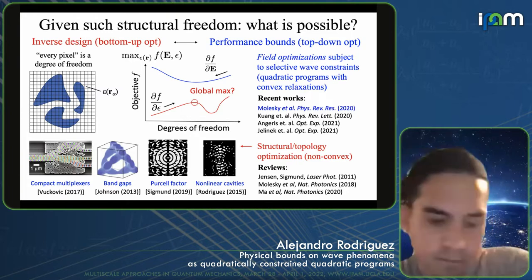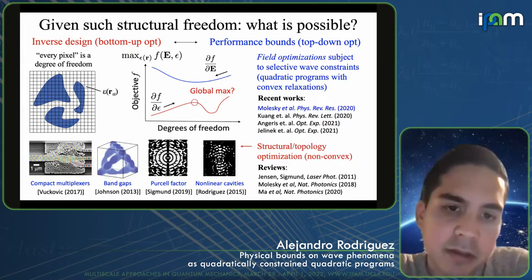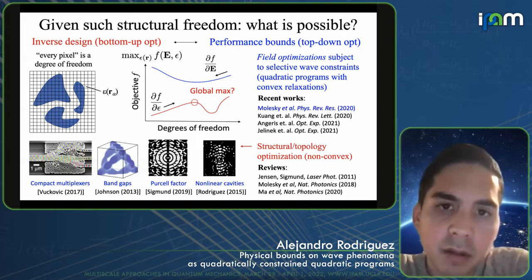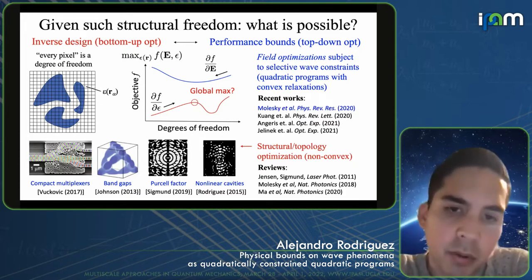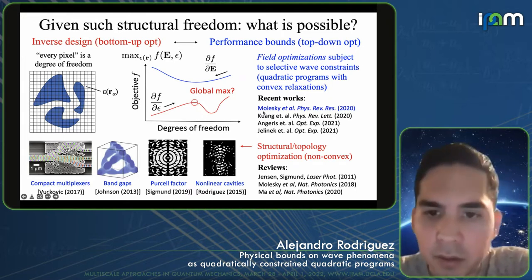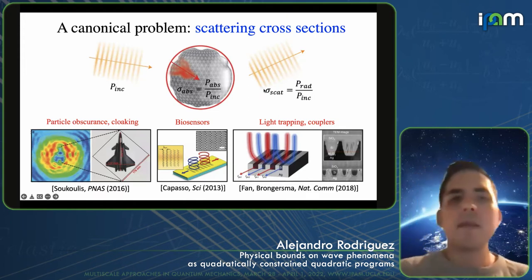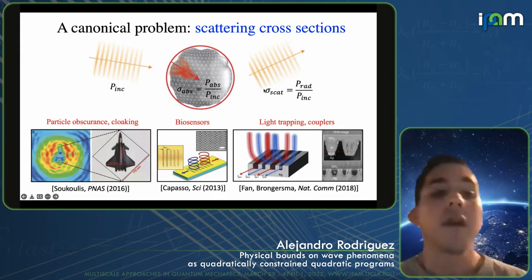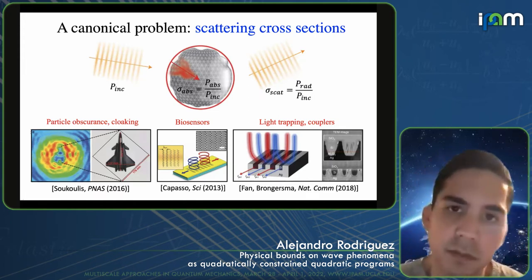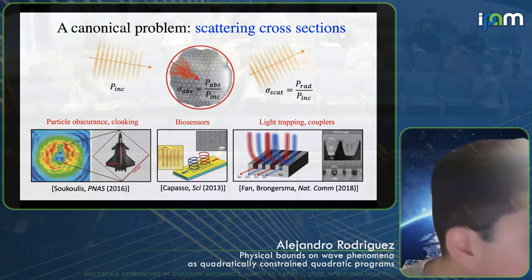From a numerical and programmatic perspective, the problems you're solving are a set of quadratic programs with convex relaxations. I'll give you an idea of what's under the hood. On the mathematical structure of the constraints: in the first example, it was Maxwell's equations.